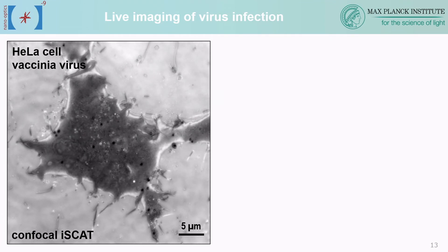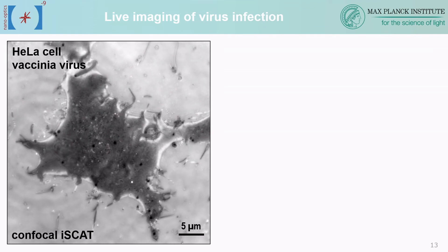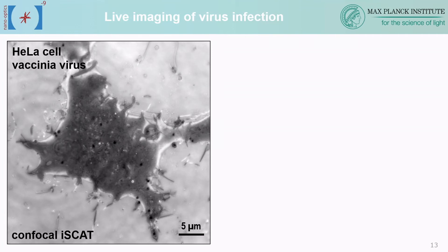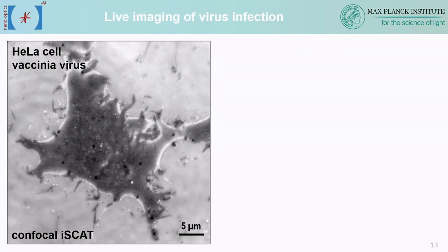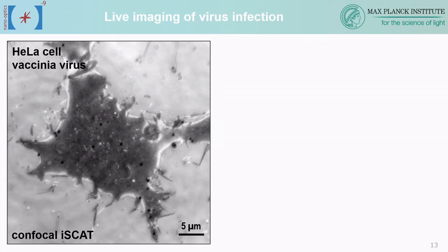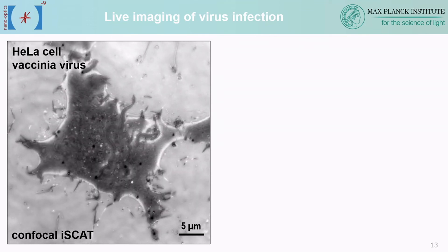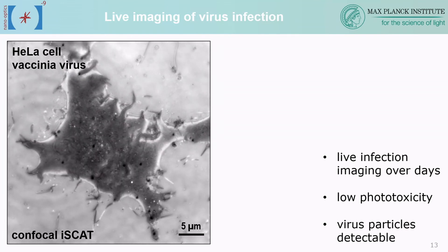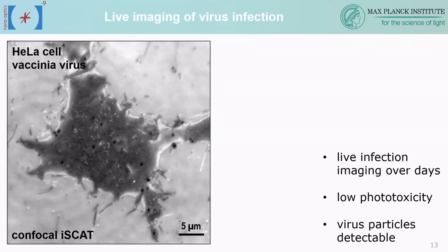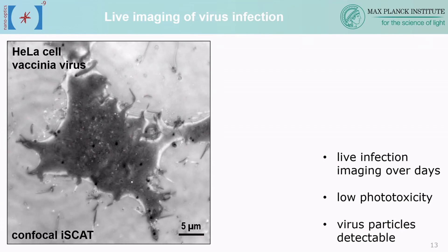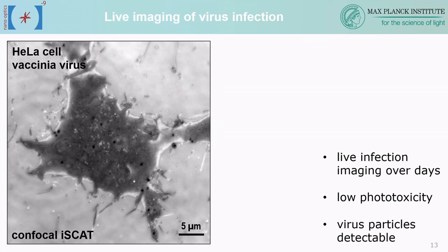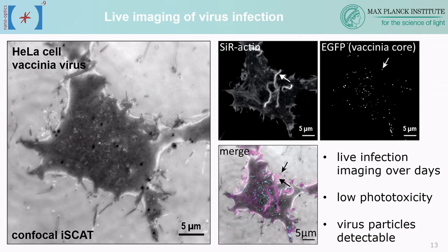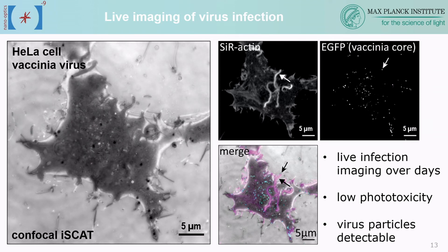Another interesting model system is looking at cell infection. Viruses are always of interest but are usually difficult to label. Here is a HeLa cell infected with vaccinia virus — you can see the viral particles in dark contrast being propelled on actin tails, a mode of transfer from an infected cell to surrounding cells. Confocal iSCAT is ideally suited for live infection imaging: it can be performed over days because you're not limited by photobleaching, you have low phototoxicity since there's only scattering and no absorption, and you can detect individual particles while still combining with fluorescence for specific structures of interest.